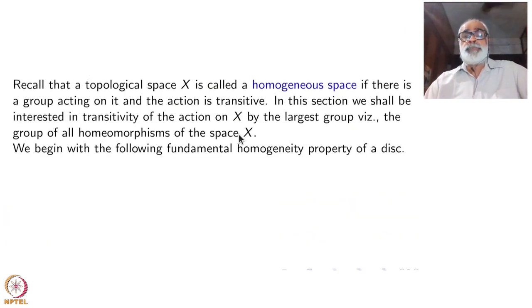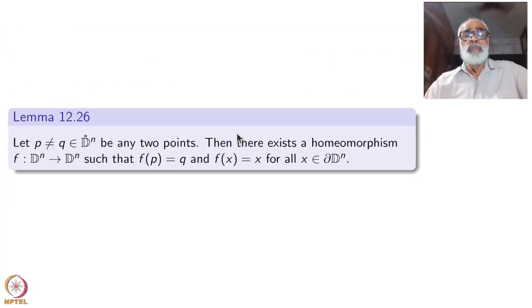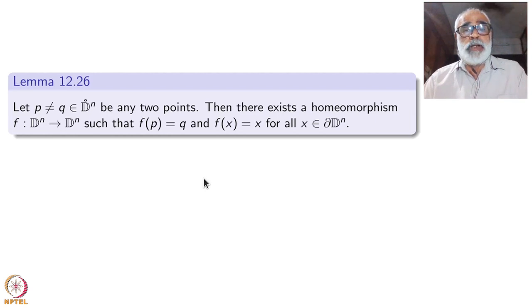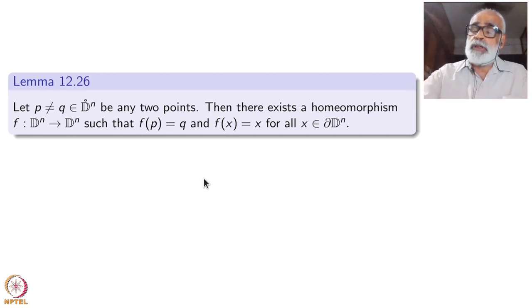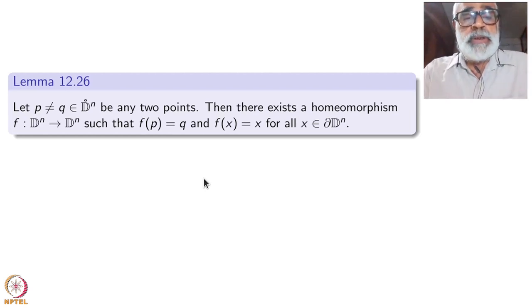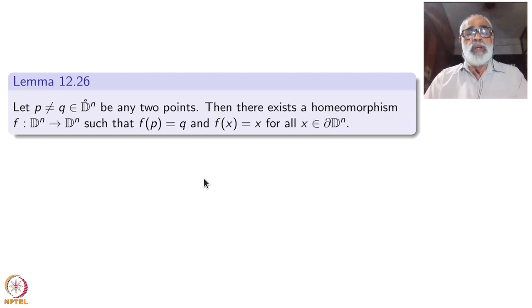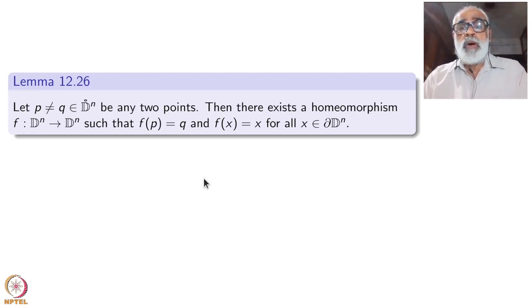The transitivity has many ramifications. We begin with the simplest object, namely the open disk — our model for manifolds. Take any two distinct points in the interior of D^n (also denoted B^n), the open ball of radius strictly less than 1. Then there exists a homeomorphism f from D^n to D^n such that f(p) = q and f(x) = x for all x on the boundary.